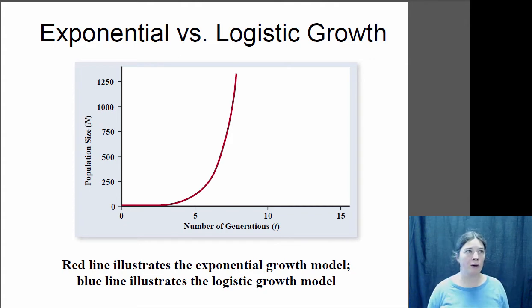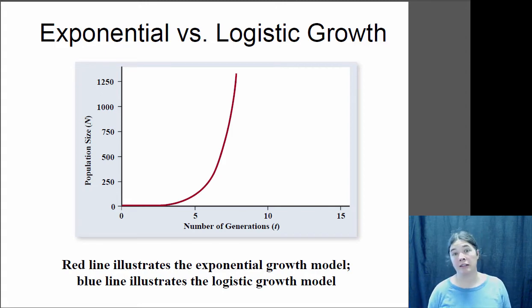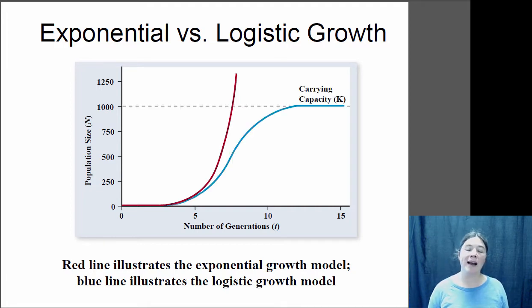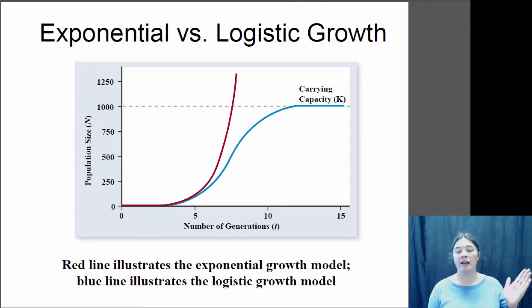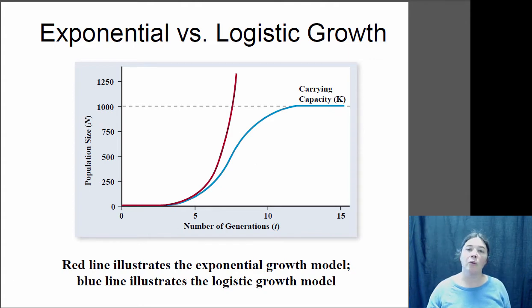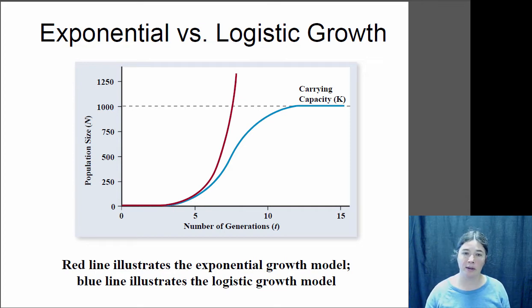The problem with exponential growth is: what happens when your backyard is full of bunnies? There's no room for more. Most of the time, the environment limits how many individuals can survive — that's what we call the carrying capacity, the maximum number of individuals that can be supported by the environment. You often see exponential growth when a new species is introduced to a new environment, but eventually they become limited by resources and their growth rate tapers off, producing an S-shaped logistic growth curve.